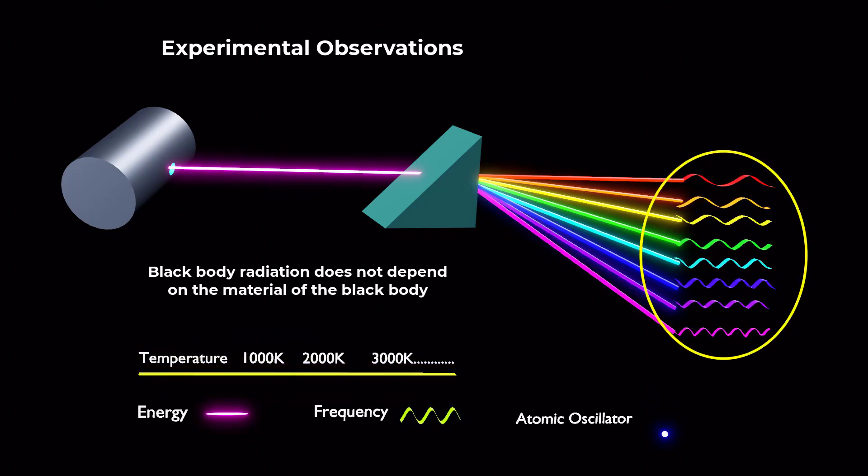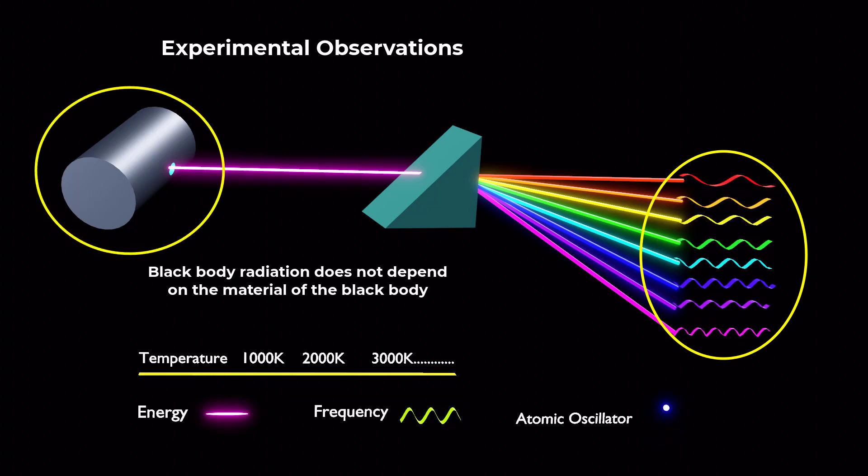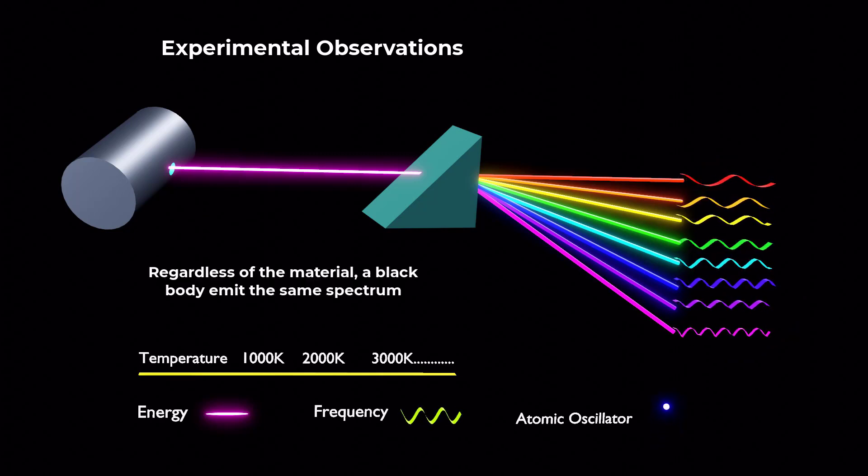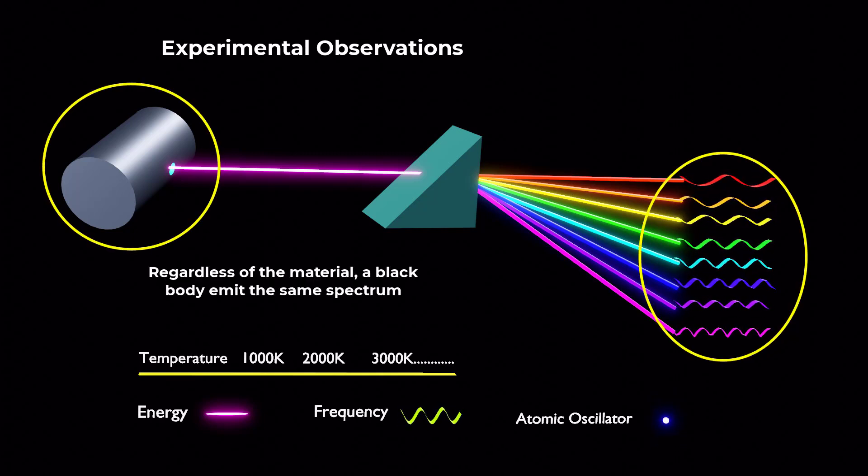Fascinatingly, black body radiation does not depend on the material or chemical composition of the black body. Regardless of the material, a black body emits the same spectrum at a given temperature.